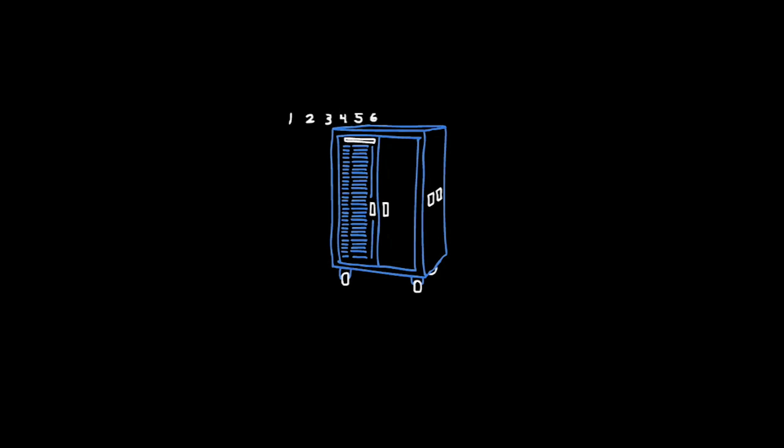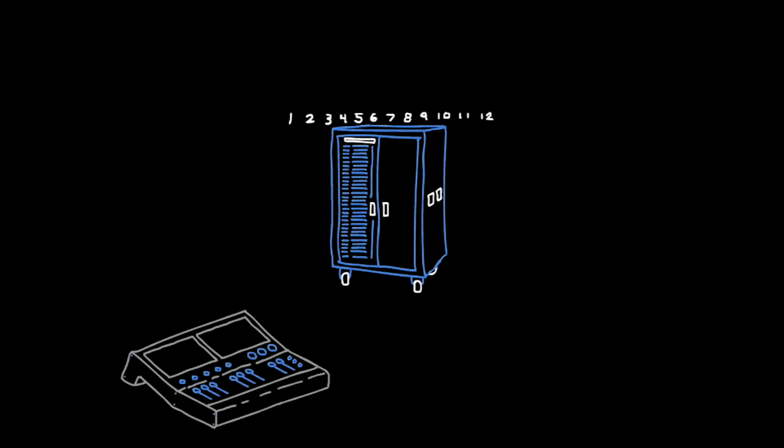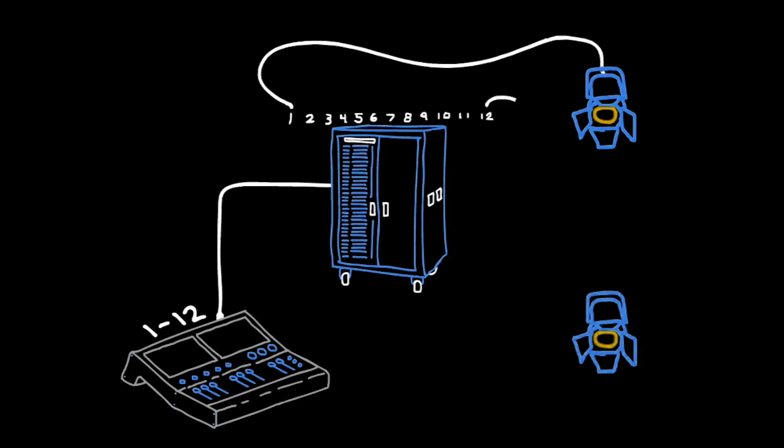6, 7, 8, 9, 10, 11, and 12. Down here, you have a 12-channel lighting console, and it also has channels 1 through 12. Let's say we have a lighting fixture up here. It plugs into dimmer 1. This lighting fixture down here plugs into dimmer 12.